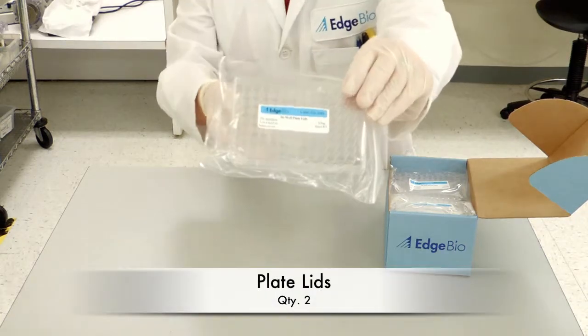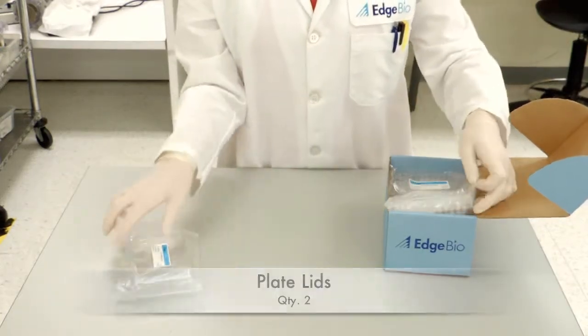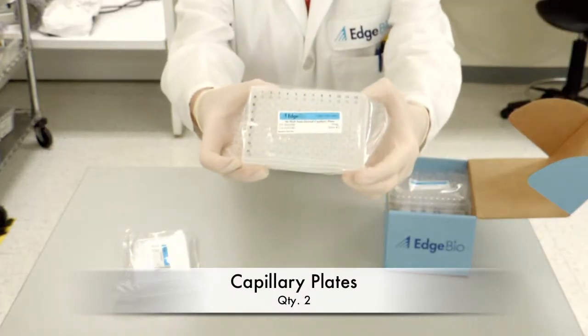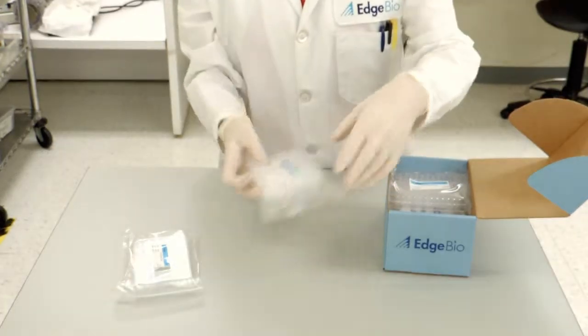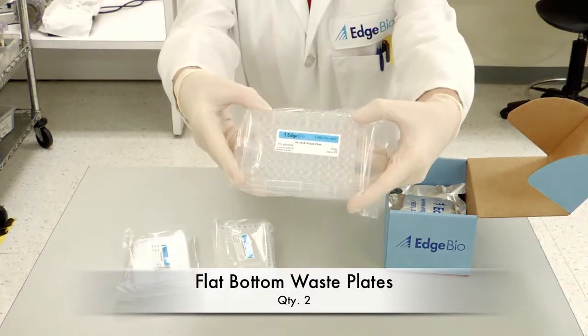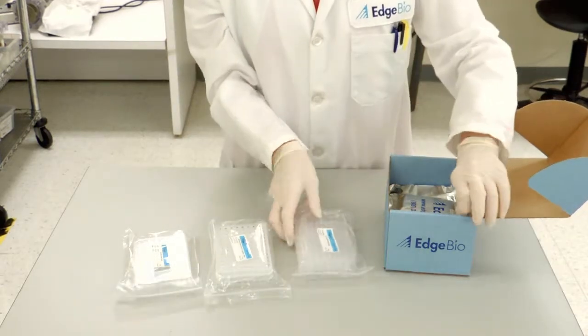Within the kit, you will find plate lids, capillary plates which serve as a receiver for the purified sample during the second spin, and flat bottom waste plates which are used to catch water eluate during the first spin.